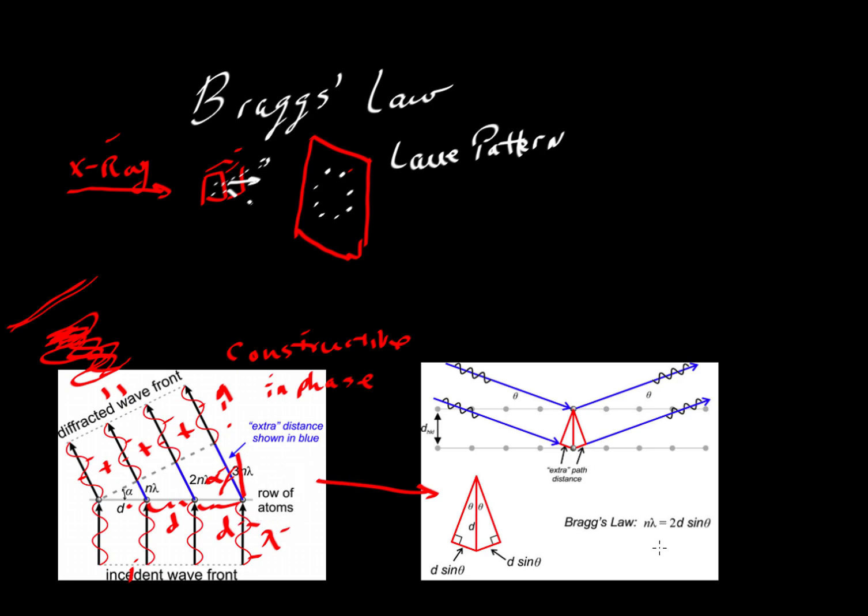The Braggs came along and gave us a similar kind of relationship using the same kinds of variables. But they did something rather clever. They recast the diffraction equation as an issue of reflection. Now the waves are not really being reflected. But as a mathematical trick the Braggs found it helpful to think about it as a problem of reflection.